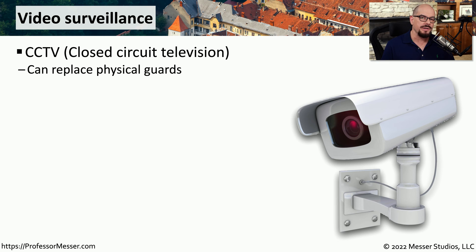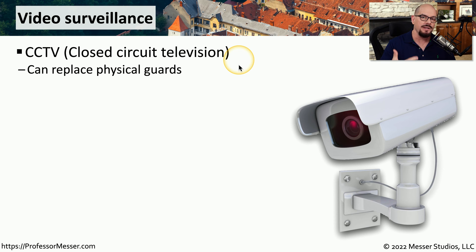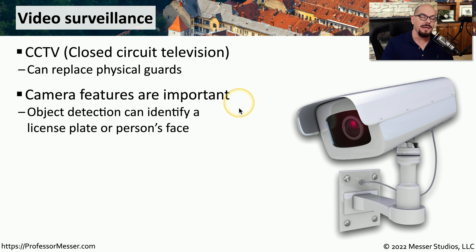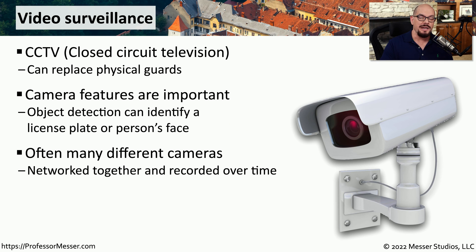Another common security feature is a video surveillance system, sometimes referred to as CCTV or closed circuit television. This allows you to get many views of what may be going on in a particular area and have all of that shown on a single screen. Many of these cameras have additional capabilities beyond just capturing video — some can find a license plate and immediately perform optical character recognition to identify the numbers and letters, or they may be able to identify that a person is walking by rather than an animal because they can identify what a person's face looks like. Most organizations put many different cameras in their facility and bring all of those cameras back to a central monitoring facility.